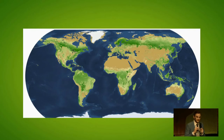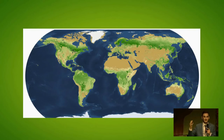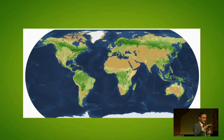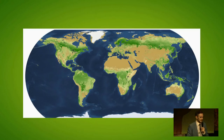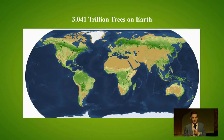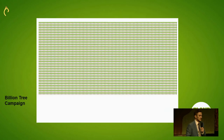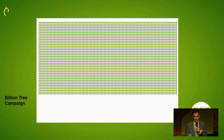So we generated the first global map of forest trees around the world using satellite data and ground-sourced forest inventory data, so that we could understand how many trees there are in all the pixels across the world. And this revealed that there were just over three trillion trees on Earth.